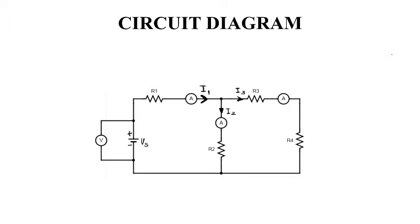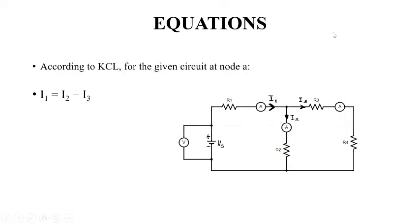This is your given circuit diagram. It is quite similar to the diagram for Kirchhoff's Voltage Law. The only difference here is that you now have three ammeters in place of three voltmeters, because this experiment requires us to measure current rather than voltage.